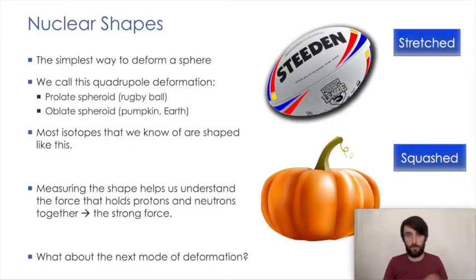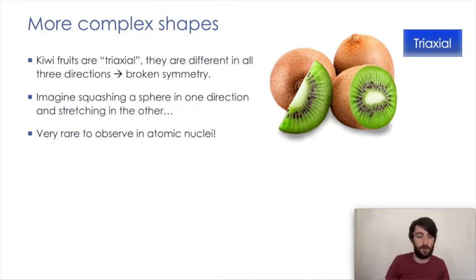Those are the two simple shapes. What about more complex shapes? We can look again to nature and see what more complex shapes we can find. This is just an example of a kiwi fruit. If you slice a kiwi fruit across the centre, you will find that instead of having a circular cross-section, in fact, there's an oval cross-section. This is because all three axes are different in a kiwi fruit, and this is why we call it triaxial. This is another symmetry that's broken - it's kind of like squashing in one direction and stretching in another. And this is how you get a triaxial-type shape or kiwi-type shape. This is very rare in atomic nuclei, and it's interesting to find these shapes and to understand the different combinations of protons and neutrons that produce such a shape.